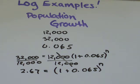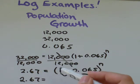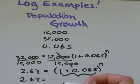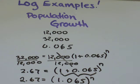The next thing I'm going to do is just simplify what's inside the brackets here. 2.67 equals 1 plus 0.065 would just be 1.065 to the exponent of n. I think that's as much as we can simplify it without taking the log.